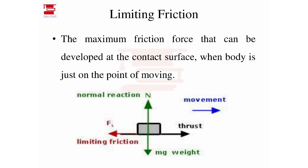When the body is just on the point of moving — that is, movement is just starting — the maximum value of friction force developed is the limiting friction. Limiting friction is the maximum friction force that can be developed at the contact surface when the body is just on the point of moving.